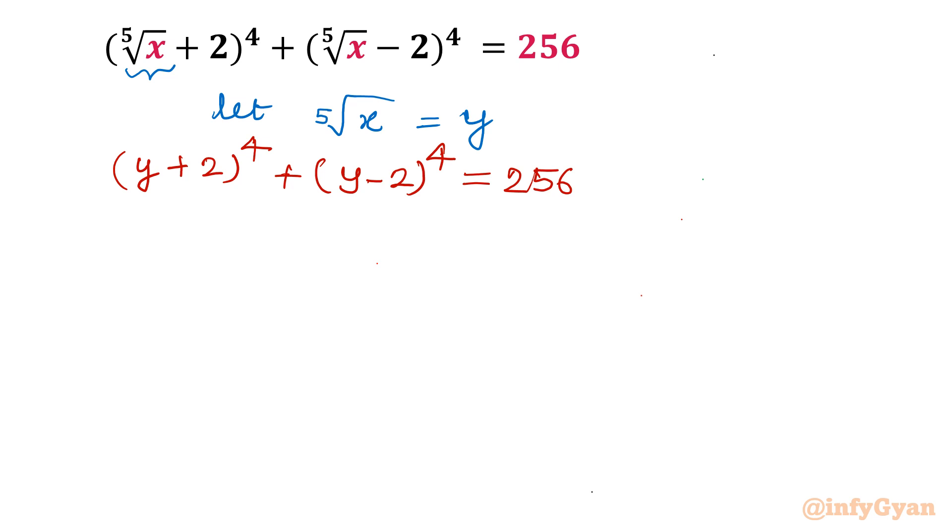Now I will use binomial expansion. For that purpose I need to use Pascal triangle because it is a plus b whole power 4. So let us consider Pascal triangle first: 1, 1; 1, 2, 1; 1, 3, 3, 1; and now power 4 gives 1, 4, 6, 4, 1. These are the coefficients of our expansion.